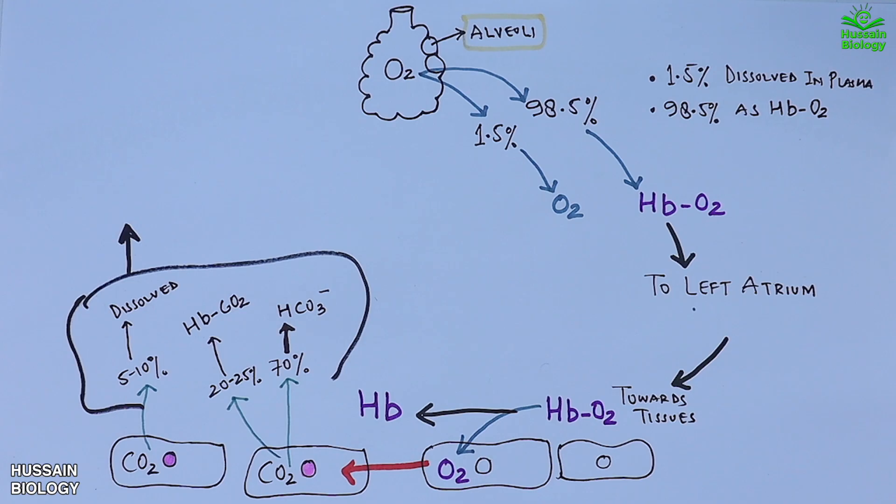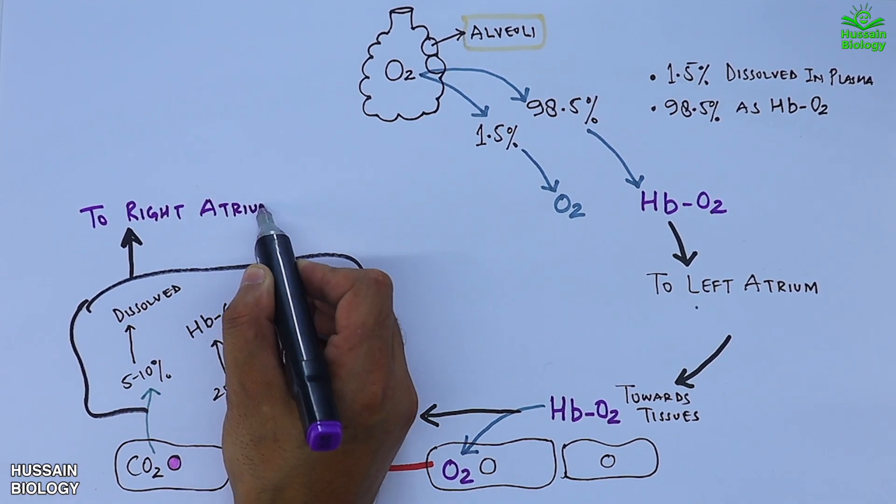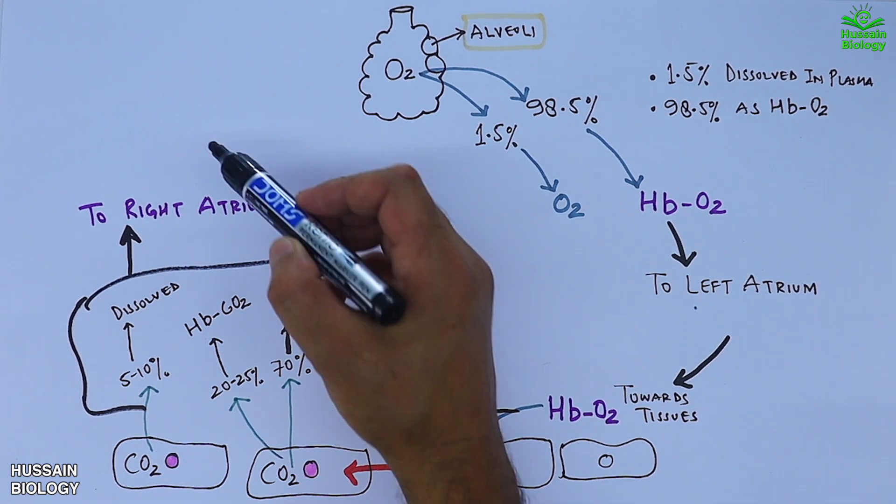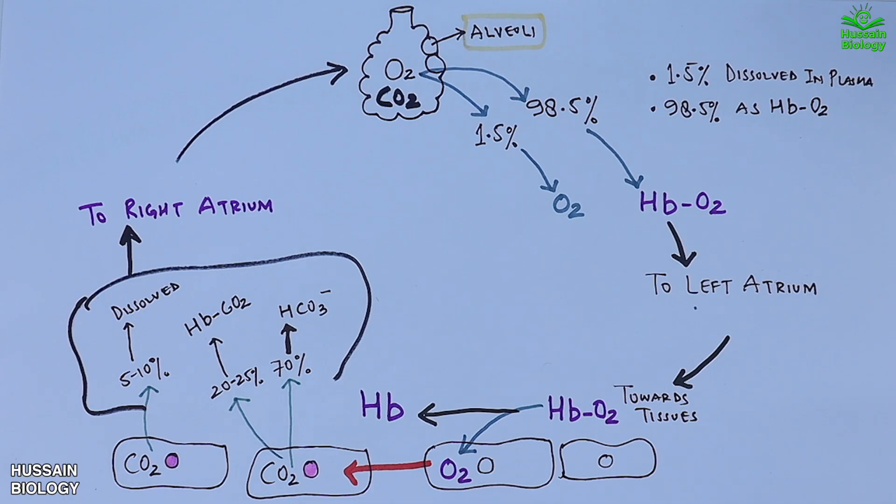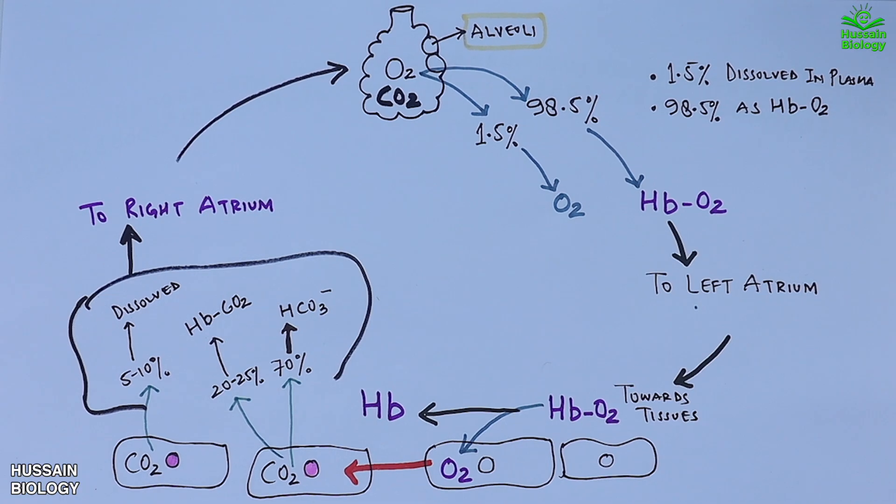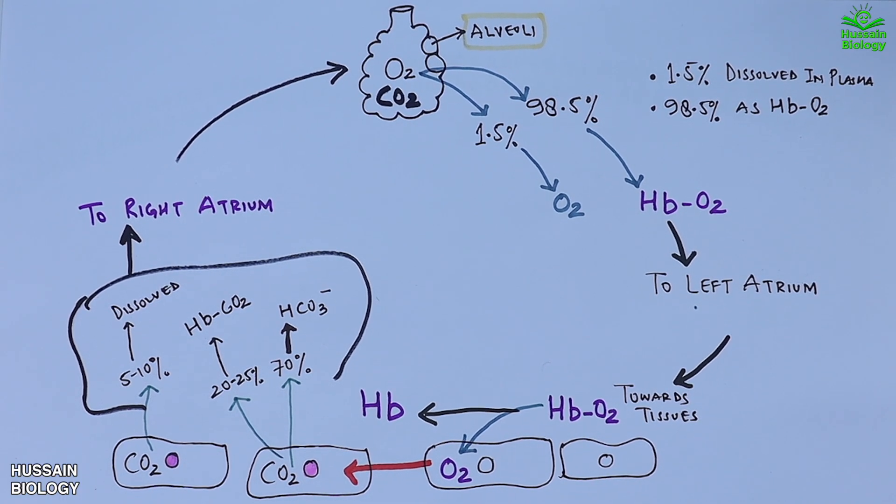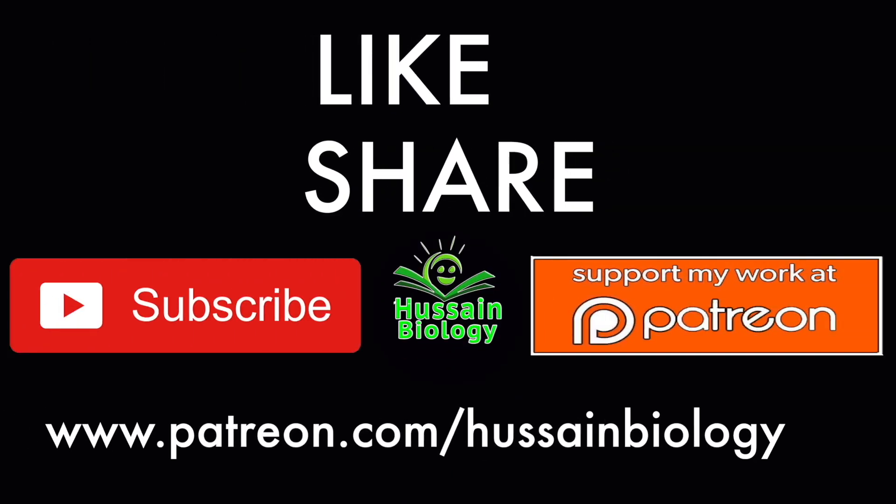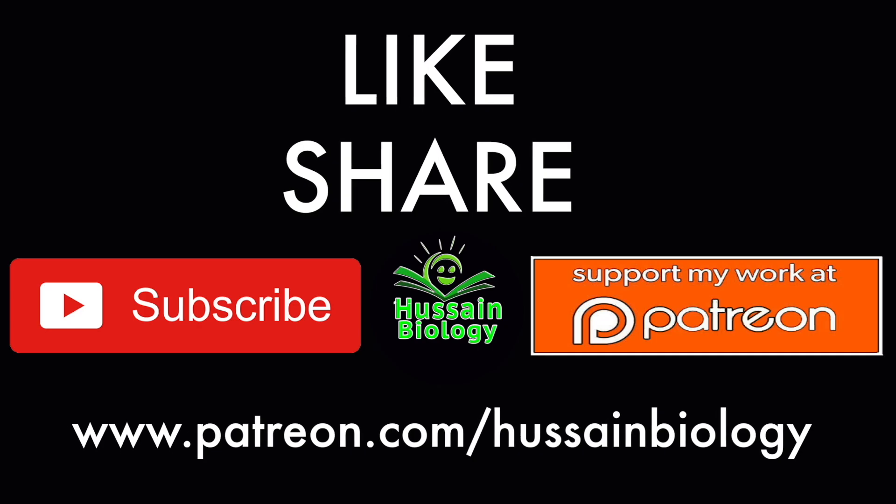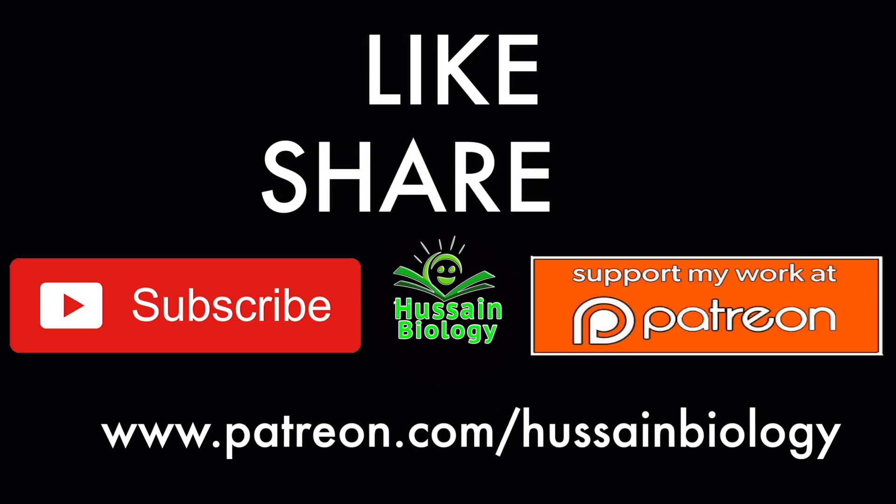The CO2-rich blood is then transported back to the right atrium and eventually to the alveoli, where carbon dioxide is exhaled and the cycle starts again. This marks the end of oxygen transport by hemoglobin molecules. In the next video, we'll discuss the oxygen dissociation curve.